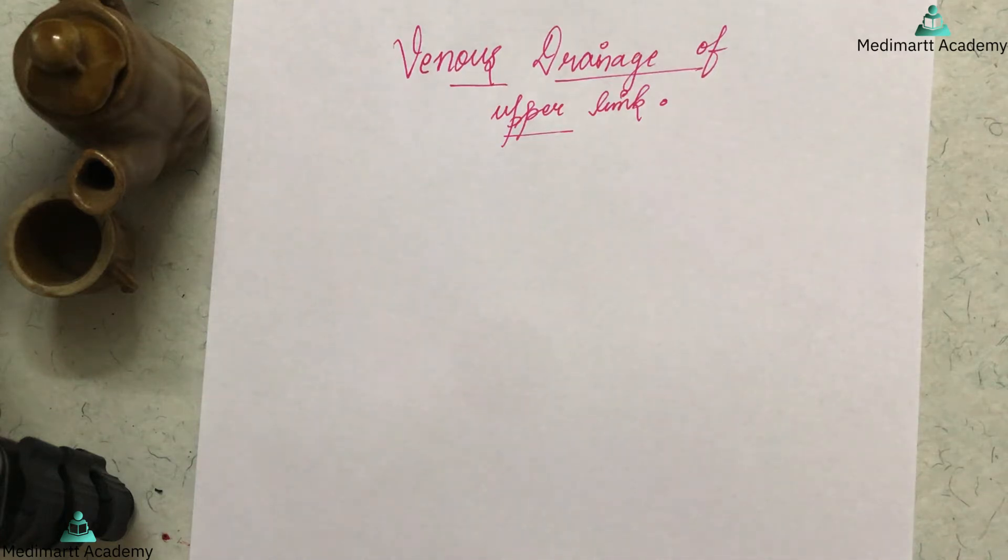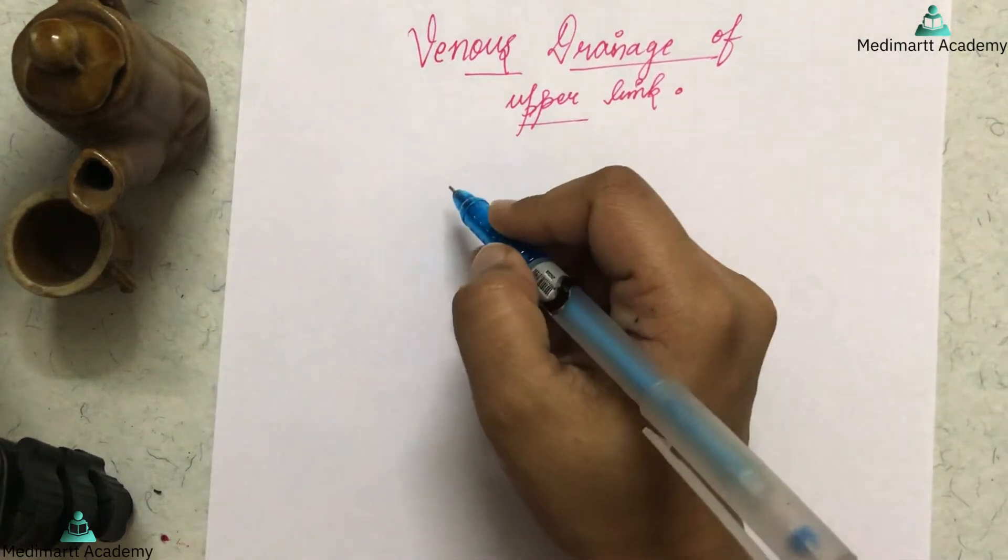The median cubital vein starts from 2.5 centimeters below the bend of the elbow, goes upwards and medially from the cephalic vein to the basilic vein, and ends 2.5 centimeters above the bend of the elbow. So without wasting much time, let's start.